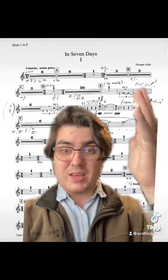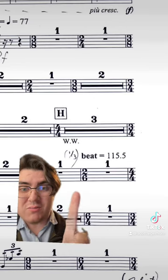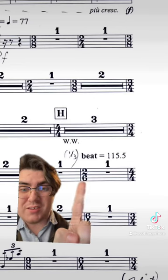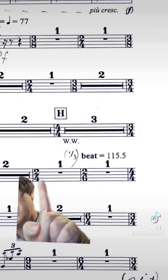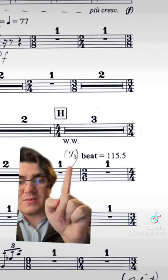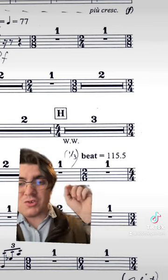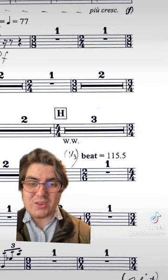Lo and behold, this week in the Louisville Orchestra, we are playing In 7 Days, which is a piano concerto by the British composer Thomas Adès. And if you look down here, you'll see that he writes a 2-6 measure, meaning that this measure is composed of two quarter note triplets of this 2-4 measure. And he even tells us the new tempo is 115.5, which we don't need if we all know what a 6th note is.